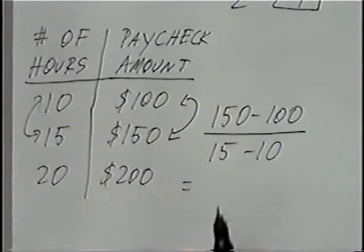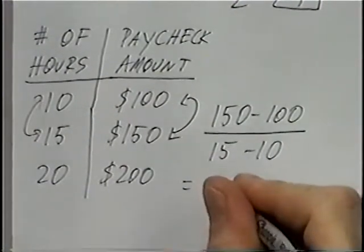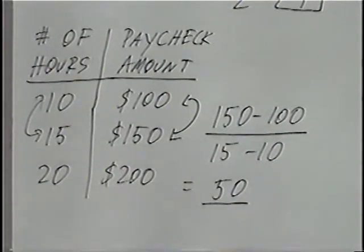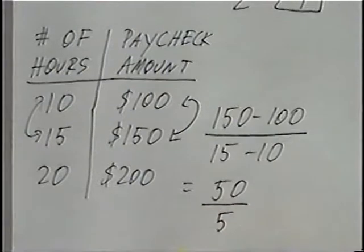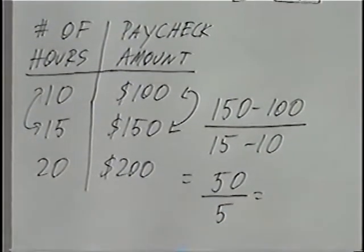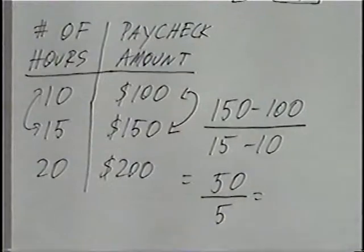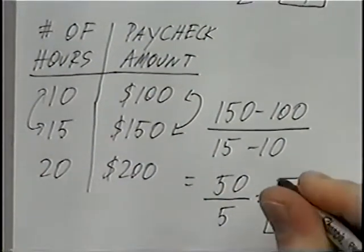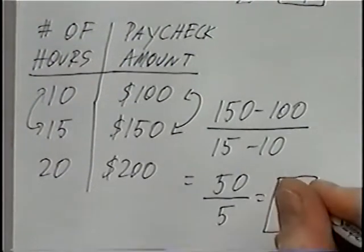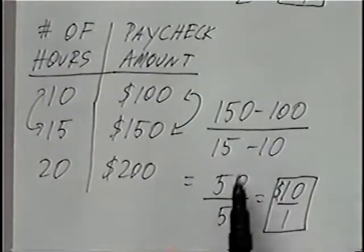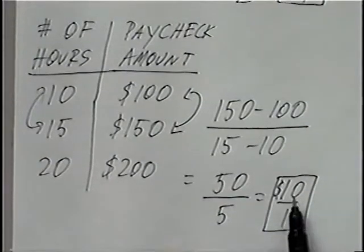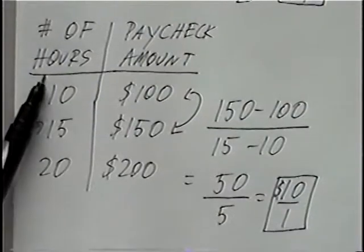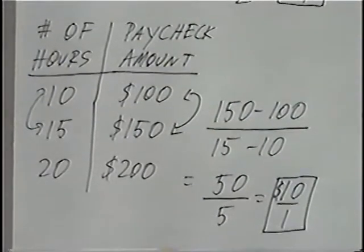Simplifying the fraction: 150 minus 100 equals 50, divided by 15 minus 10 equals 5. So 50 divided by 5 equals 10, or you can leave it as 10 over 1. Since the values are in dollars, this would be $10 over 1 — meaning your paycheck is $10 for every one hour worked.